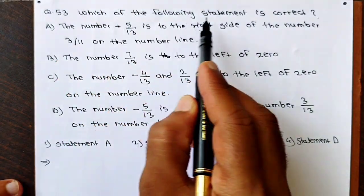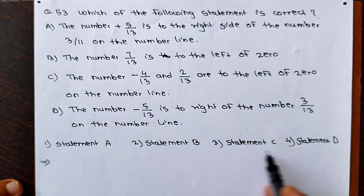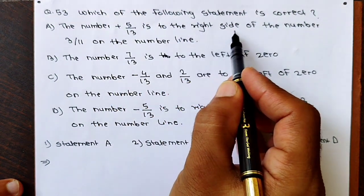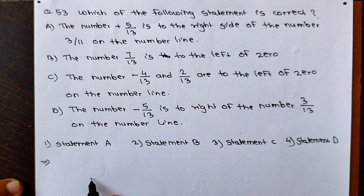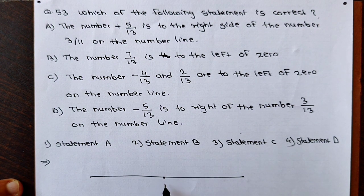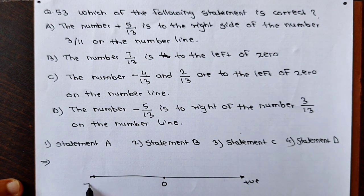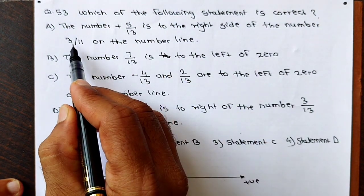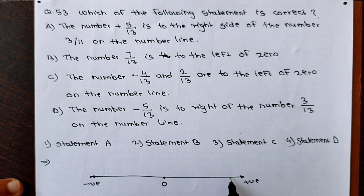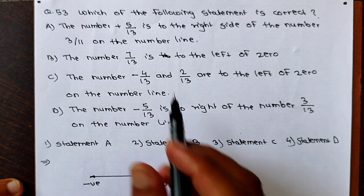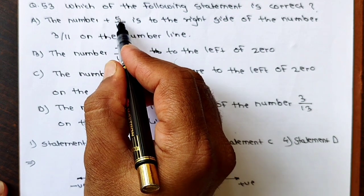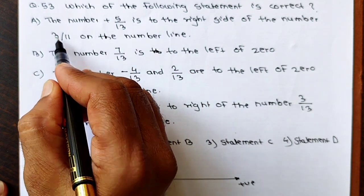Question number 53: Which of the following statements is correct? The number line has positive numbers on the right and negative numbers on the left of the origin. The first number is 5/13 and the second is 3/11. Both are positive so both lie on the right side of the origin. In both numbers, the parts are different — 5/13 means 5 parts out of 13, and 3/11 means 3 parts out of 11.